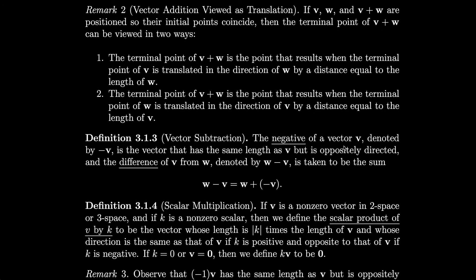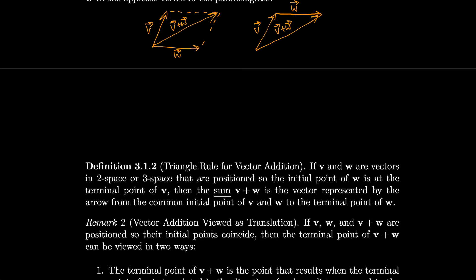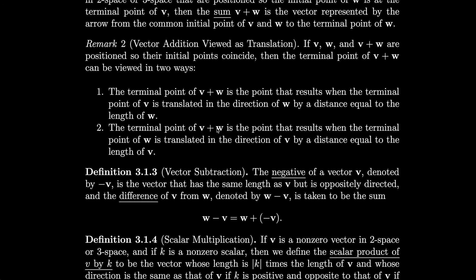To think of vector subtraction, we take the negative of a vector v, denoted by minus v — that's the vector with the same length as v but oppositely directed. So if here's v going in one direction, minus v goes in the opposite direction. The difference w minus v is taken to be the sum w plus that negative, that is w plus (minus v).